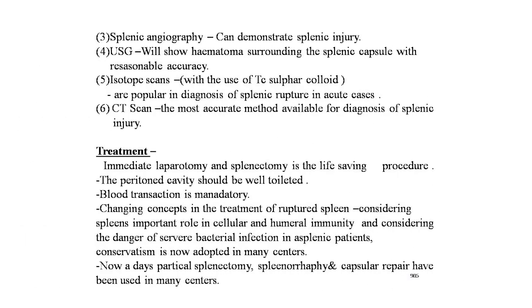Splenic angiography can demonstrate splenic injury. Ultrasonography will show hematoma surrounding the splenic capsule with reasonable accuracy. Isotope scans using technetium sulfur colloid are popular for diagnosing splenic rupture in acute cases. CT scan is the most accurate method available for diagnosis of splenic injury. Treatment: immediate laparotomy and splenectomy is the life-saving procedure; the peritoneal cavity should be well-toileted and blood transfusion is mandatory.